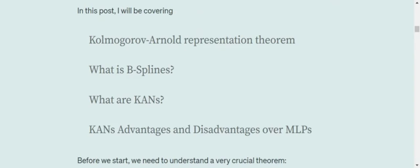we will be talking about four concepts. First is the Kolmogorov-Arnold representation theorem on which the entire idea is based. Second is what is B-Splines. Third are what are KANs, that is a short form for the name of the network, and its advantages and disadvantages over MLPs, that is multi-layer perceptrons. So let's get started.